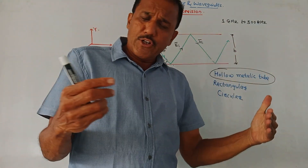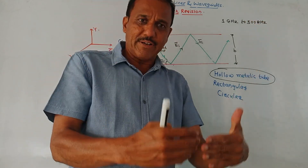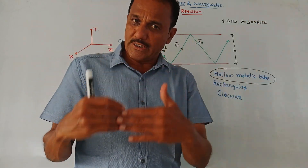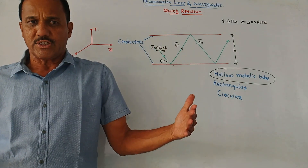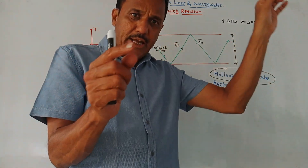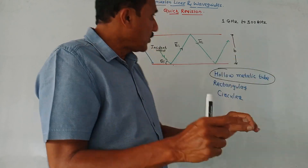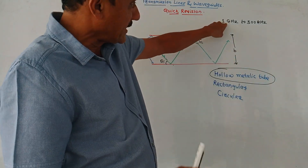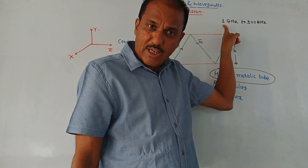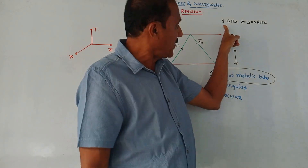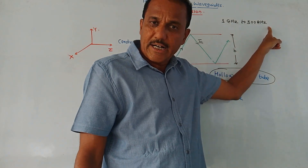In regular videos, we have studied what are microwaves, what are its advantages and what are the applications. From the exam point of view, you may explain a question like: define microwaves, enlist its advantages and disadvantages. We know that microwaves are EM waves having the frequency range 1 GHz to 300 GHz.